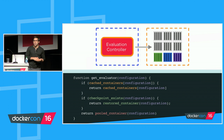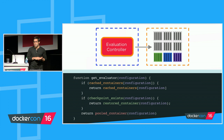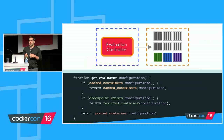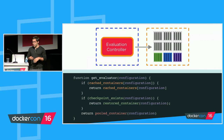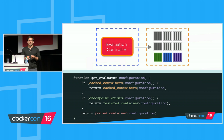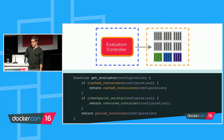The evaluation controller looks at the pool of containers and essentially has three choices. In the first two cases, we're dealing with a container we've already checkpointed and seen before. Since that's not the case here, we skip to the third option and return a container from our pre-available pool. Once we do that, we put another one in, so there's always a series of containers waiting.